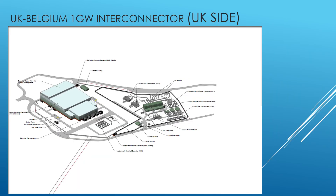This slide shows the UK side of the UK-Belgium 1 gigawatt interconnector. As you can see, on the left hand side there is a converter station, which we can call a DC station, connected to an AIS compound which has a few transformers, a GIS substation, and an SVC, which is ultimately connected to a subsea cable going towards Belgium.